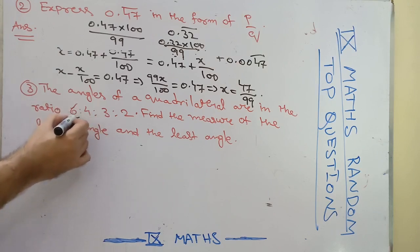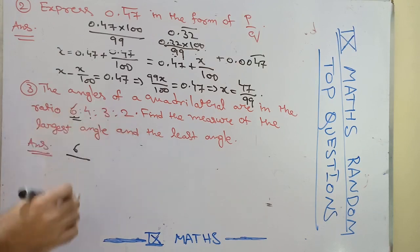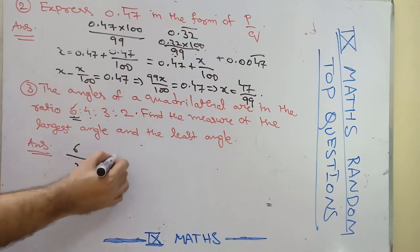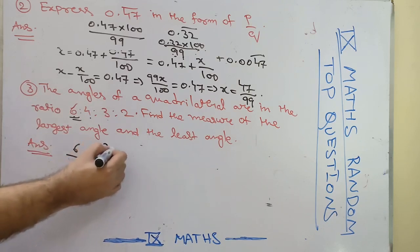So 6 divided by, if we sum this, 6 plus 4 plus 3 plus 2, that is 15. 6 by 15 times, the sum of the angles in a quadrilateral is 360. So this goes 24 times.